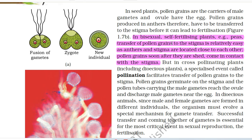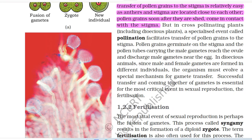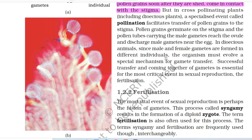Pollen grains produced in anthers have to be transferred to the stigma before fertilization can occur. In bisexual self-fertilizing plants, for example peas, transfer of pollen grains to the stigma is relatively easy as anthers and stigma are located close to each other. But in cross-pollinating plants including dioecious plants, a specialized event called pollination facilitates transfer of pollen grains to the stigma. Pollen grains germinate on the stigma and the pollen tubes carrying the male gametes reach the ovule and discharge male gametes near the egg. In dioecious animals, since male and female gametes are formed in different individuals, the organism must evolve a special mechanism for gamete transfer. Successful transfer and coming together of gametes is essential for the most critical event in sexual reproduction — fertilization.